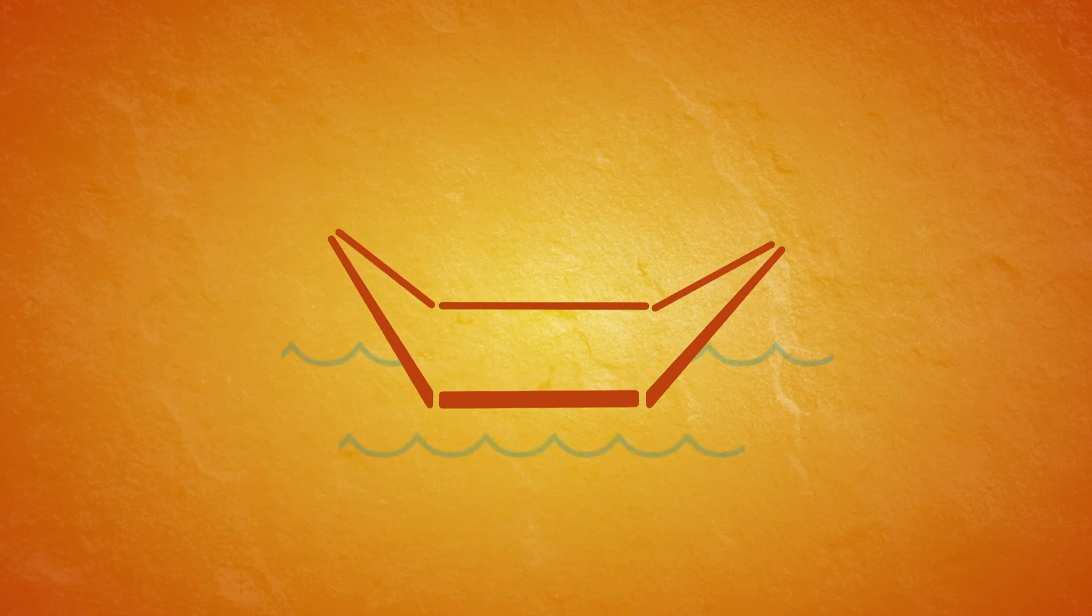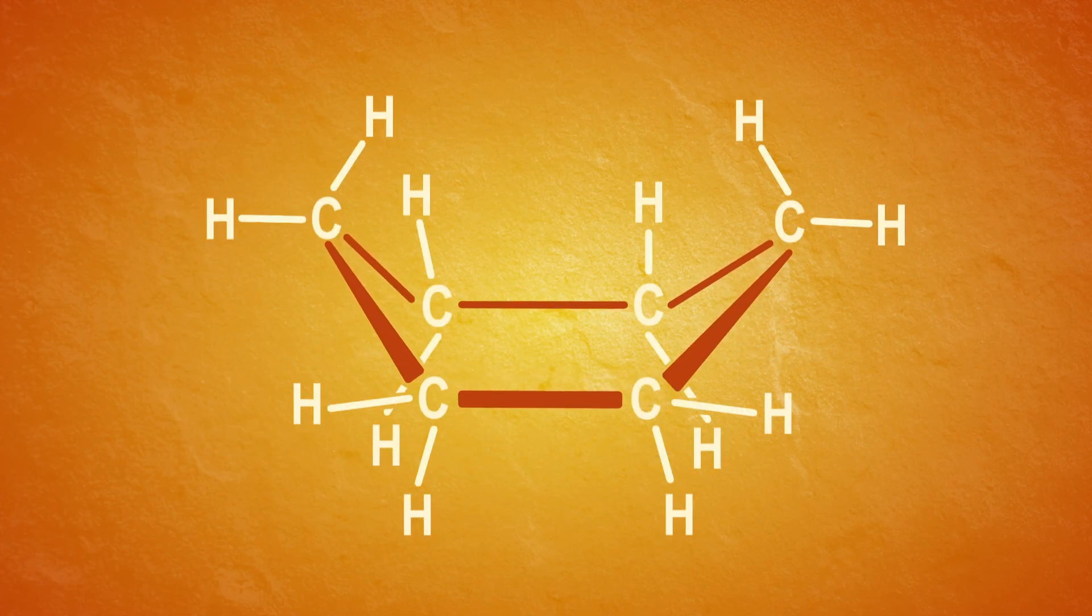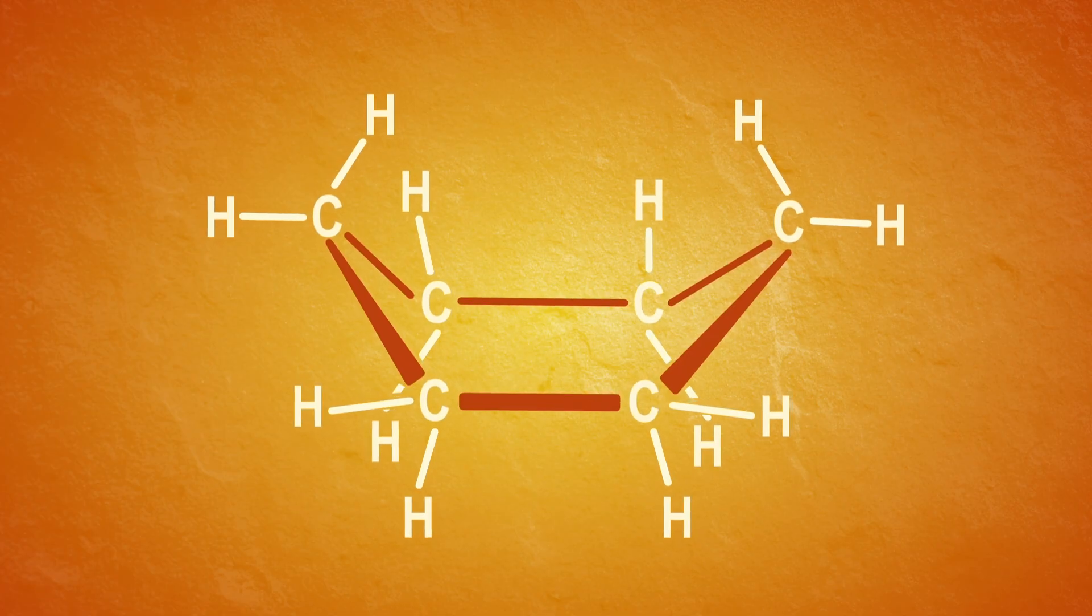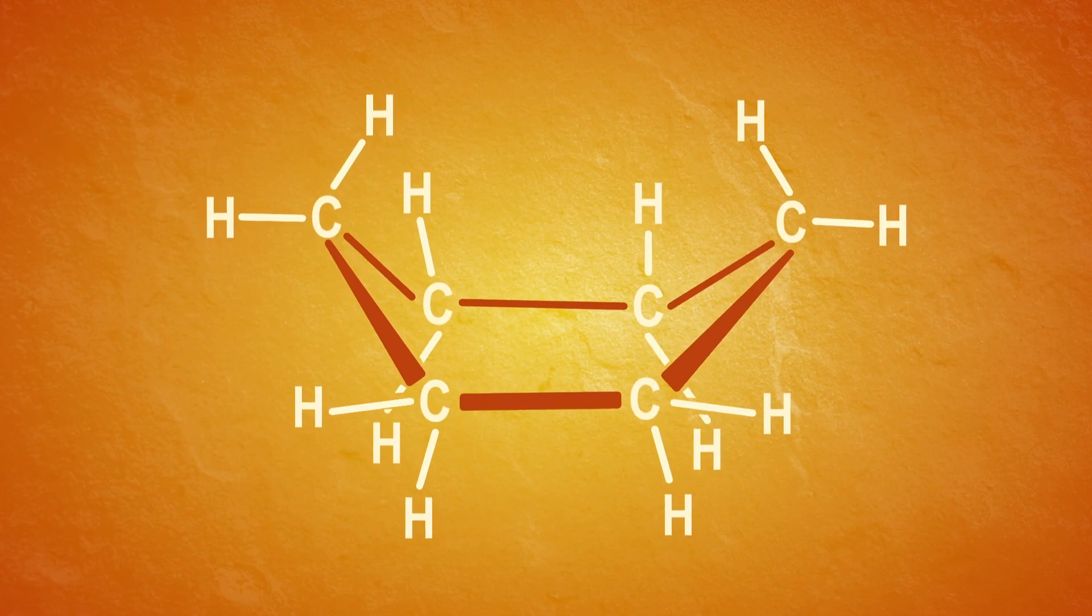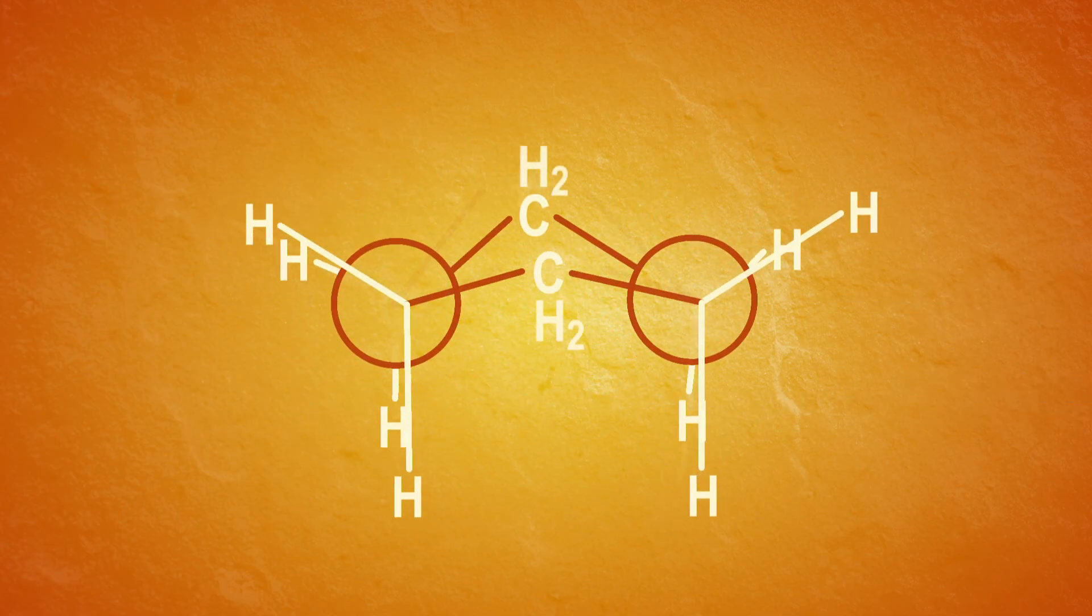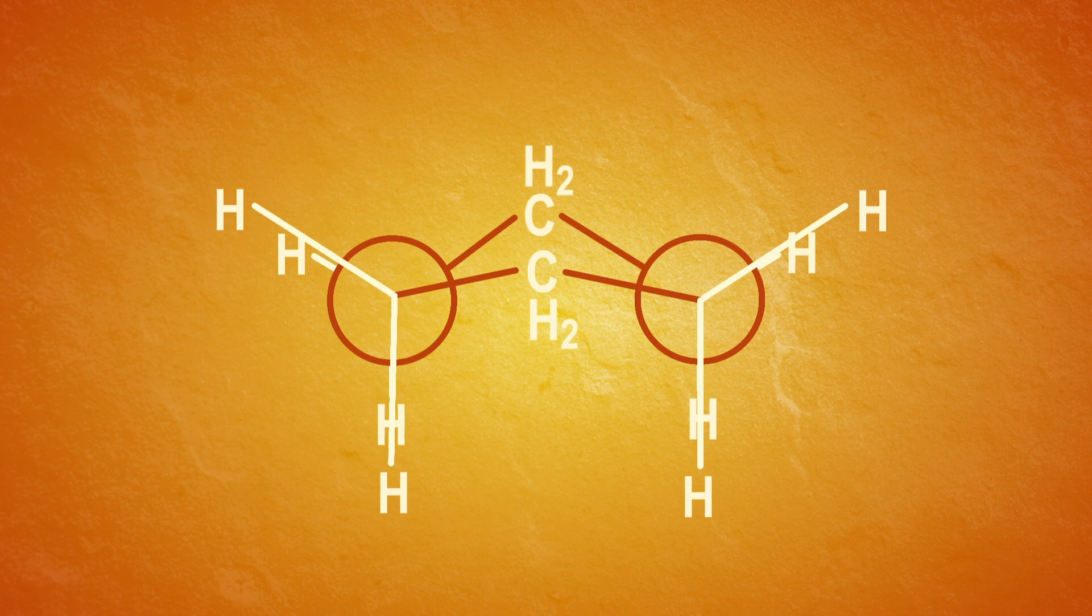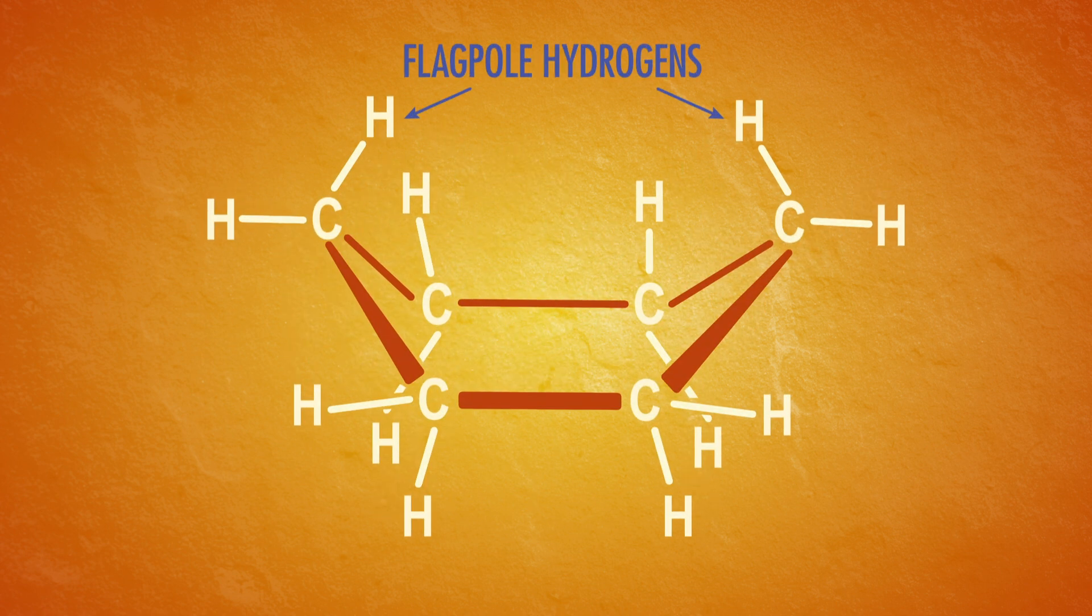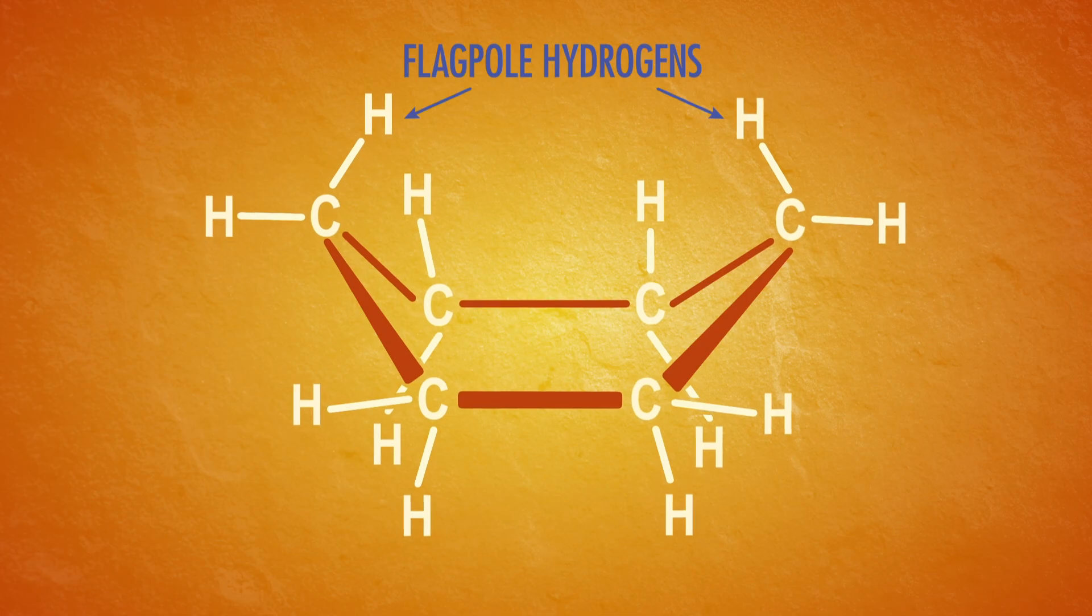Cyclohexane can pucker in other ways too with a little bit of ring strain, like in the boat conformation, which is also kind of honestly like a goofy-looking boat. In the boat conformation, the footrest of the chair lines up with a headrest to make a little nook. The angles between carbon atoms are still 109.5 degrees, but now there's a little torsional strain. By drawing a Newman projection, we can see that the hydrogens are all eclipsed. But there are also two flagpole hydrogens that are sticking towards each other. To relieve strain from this interaction, the boat twists a bit so the flagpole hydrogens don't get too close, sort of like turning your head for a kiss to avoid smashing noses.